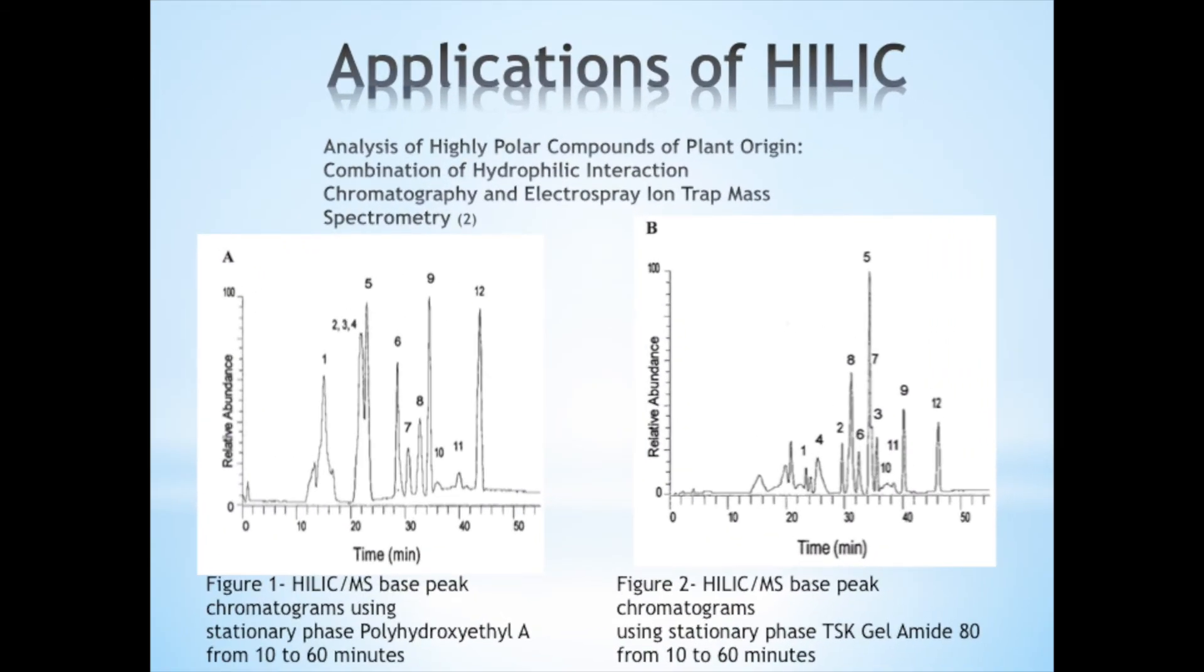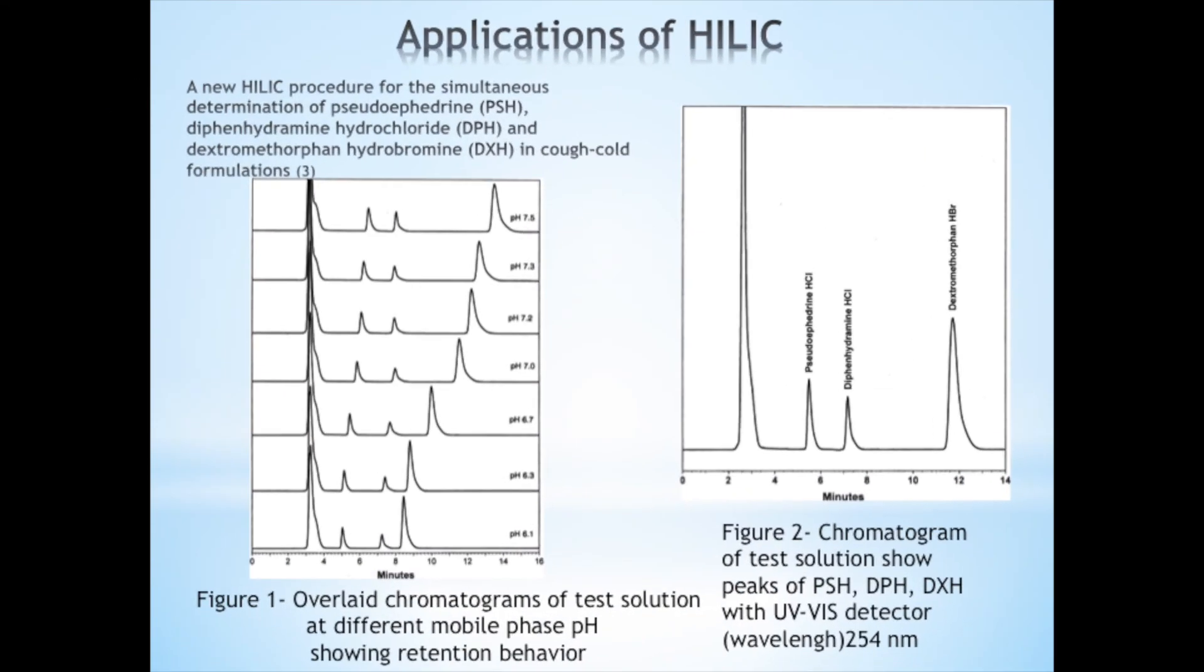In this other scientific study, two types of HILIC microbore columns, polyhydroxyethyl A and TSK Gel Amide 80, were compared to normal-phase silica HPLC columns for the analysis of highly polar compounds of Cucurbita maxima leaves. The best separations of standard mixtures and plant samples were achieved with the HILIC microbore column using TSK Gel Amide 80 stationary phase, as you can see in Figure 2.